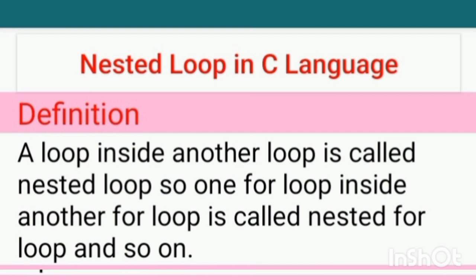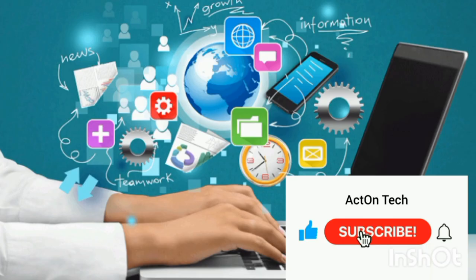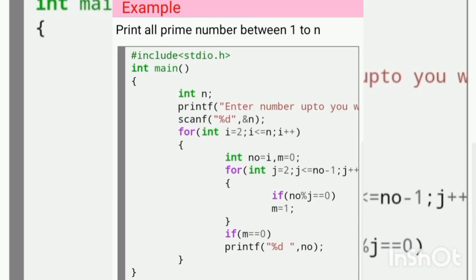Nested loop in C language: a loop inside another loop is called a nested loop. One for loop inside another for loop is called a nested for loop. The syntax shows one for loop inside another for loop.